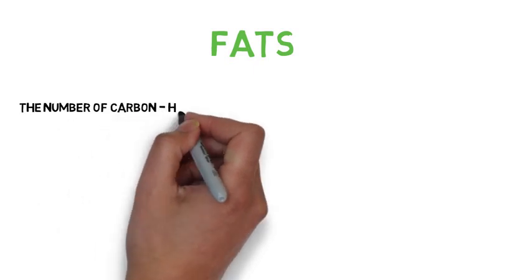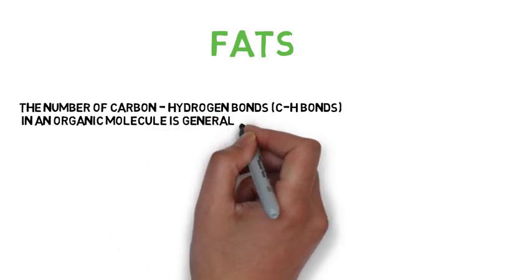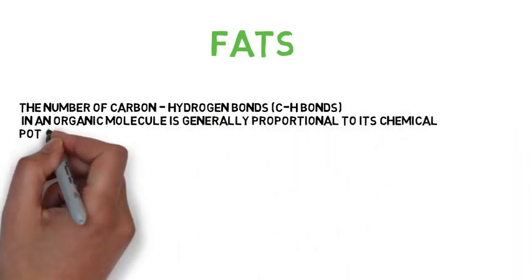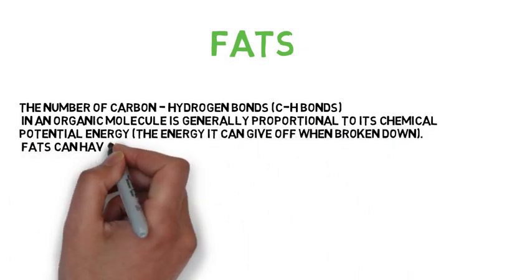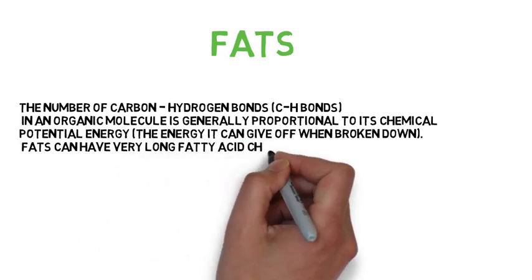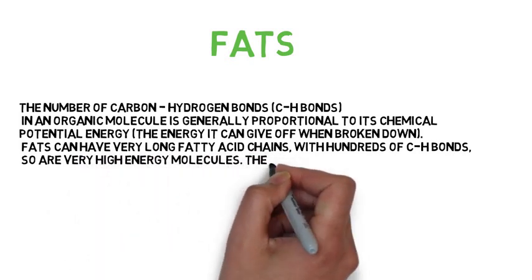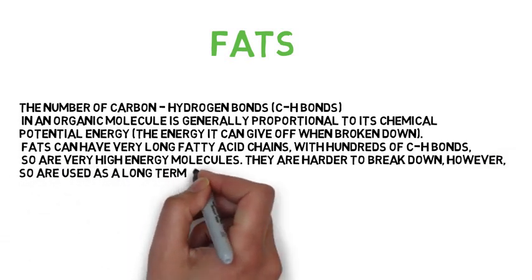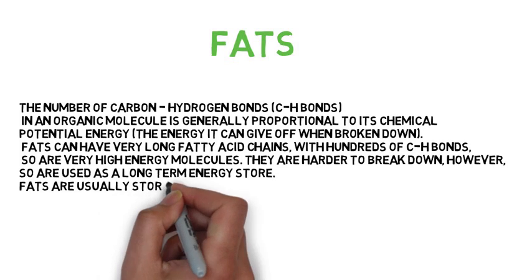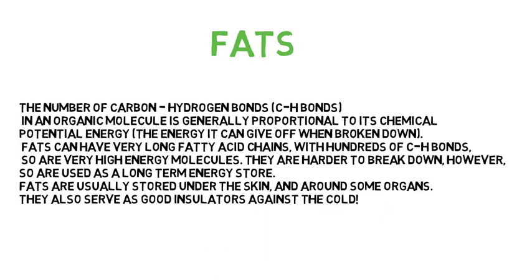This process is stimulated by the hormone glucagon. Fats. The number of carbon-hydrogen (C-H) bonds in an organic molecule is generally proportional to its chemical potential energy — the energy it can give off when broken down. Fats can have very long fatty acid chains with hundreds of C-H bonds, so are very high-energy molecules. They are harder to break down, so are used as a long-term energy source. Fats are usually stored under the skin and around some organs, and also serve as good insulators against the cold.